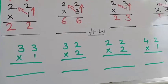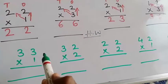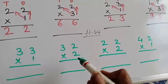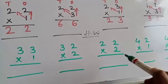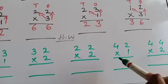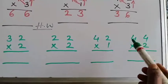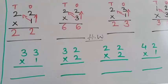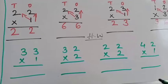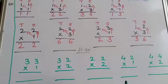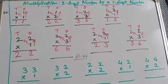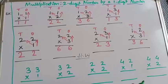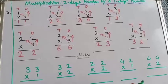Here is some homework, students. The first one is 33 multiplied by 1, 32 into 2, 22 into 2, 42 into 1, and 44 into 2. Find out the answers properly. Very importantly, you have to learn the tables — be thorough with the tables, children. It will be very easy to solve the sums. See you in the next class with the exercise. Take care and bye-bye.